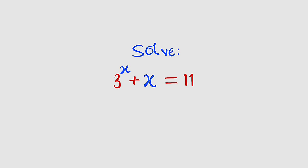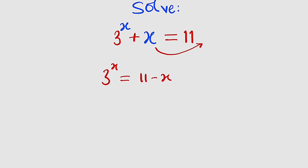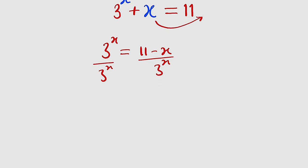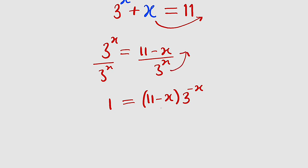We're not going to do that. Instead, we are going to apply the Lambert W function. First, let us take x to the other side. We have 3 to the power of x on the left, equal to 11 minus x. Next, divide both sides by 3 to the power of x, so on the left hand side we have 1, and on the right we have 11 minus x multiplied by 3 to the power of negative x.